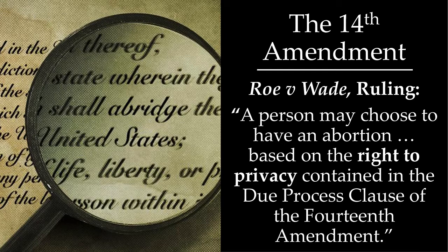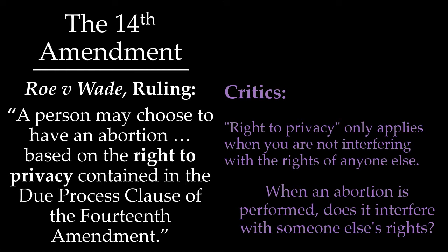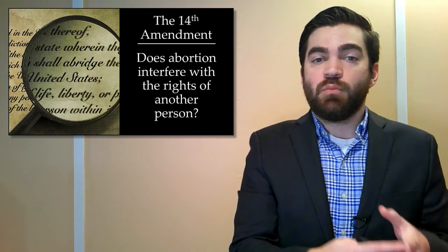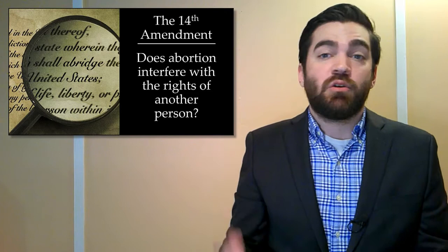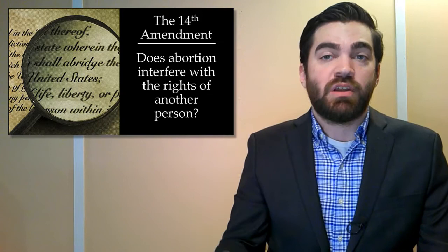But this raises an immediate problem. Critics point out that the right to privacy only applies in cases where you're not interfering with the rights of anyone else. So the question is: when an abortion is performed, are the rights of someone else being violated? Does an abortion interfere with the rights of another person? If it does, then abortion can't be legal in the United States. For abortion to be legal, the court has to show that an abortion procedure doesn't interfere with anybody else's rights — meaning the court has to show that fetuses are not persons.